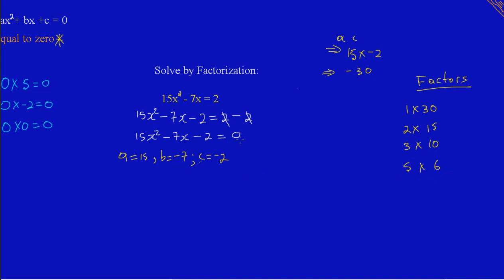Since my B is negative, I'm going to change the sign on my larger factor because the larger factor usually carries the sign of B. So -10 × 3 gives me -30, and 3 + (-10) gives me -7. There we have our factors.